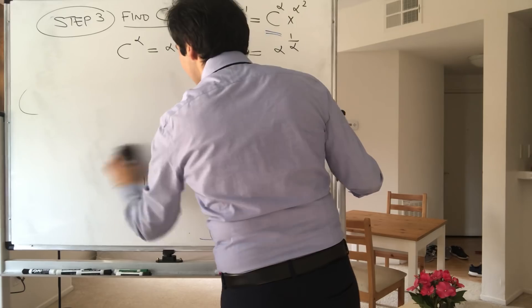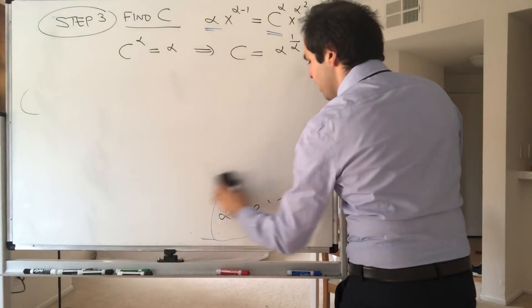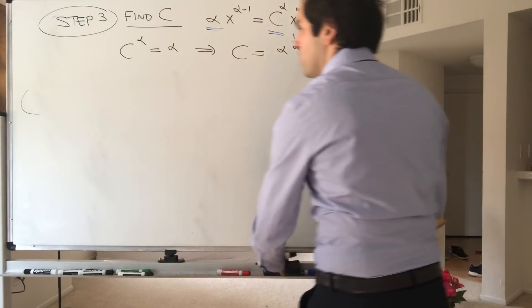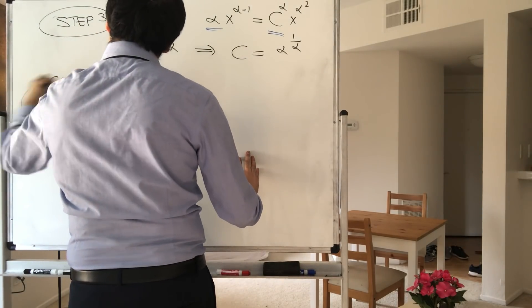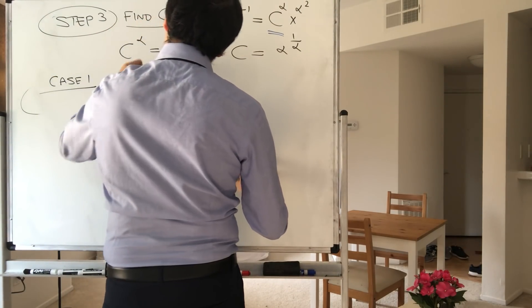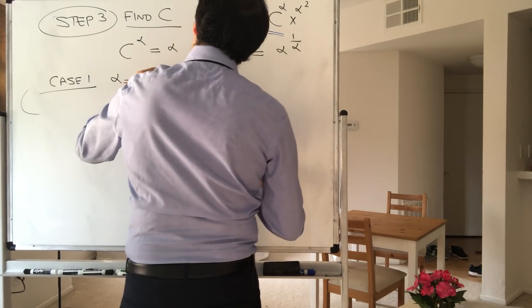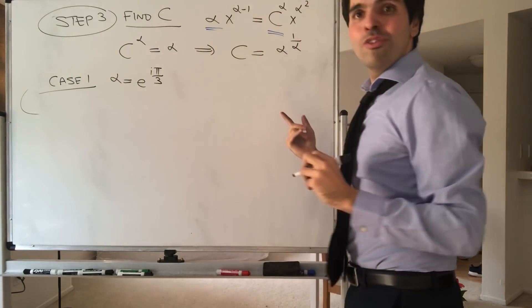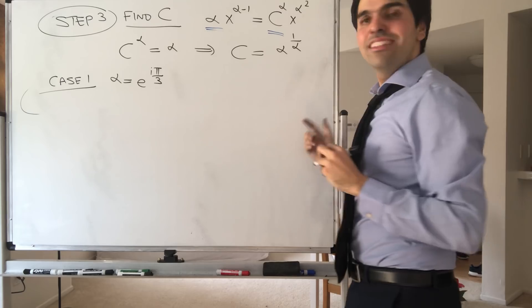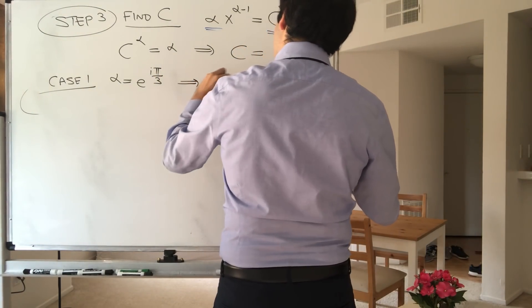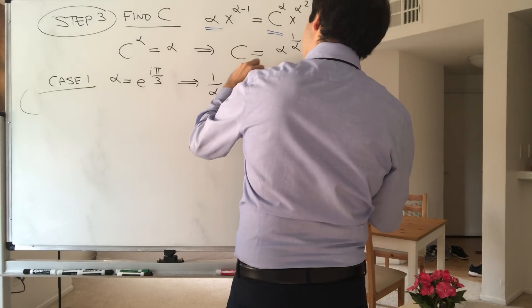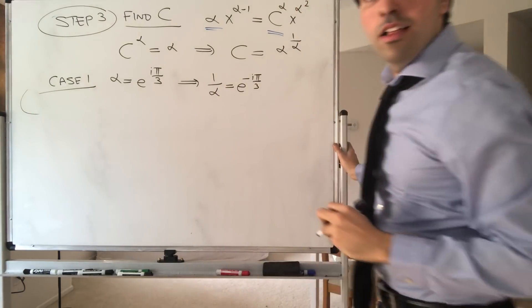So case 1, assume alpha is e to the i pi over 3. The cool thing is, then 1 over alpha is just e to the minus i pi over 3.